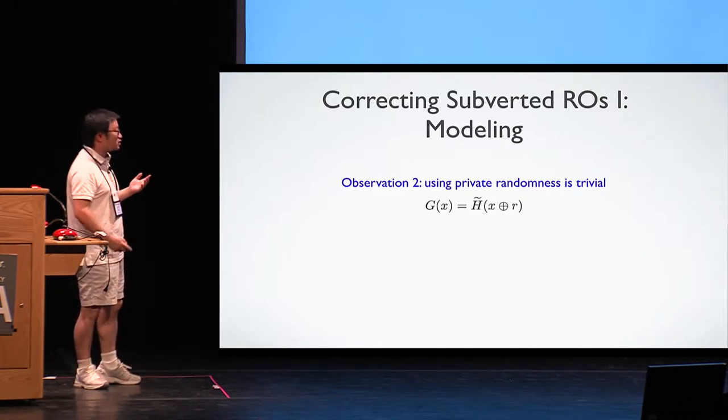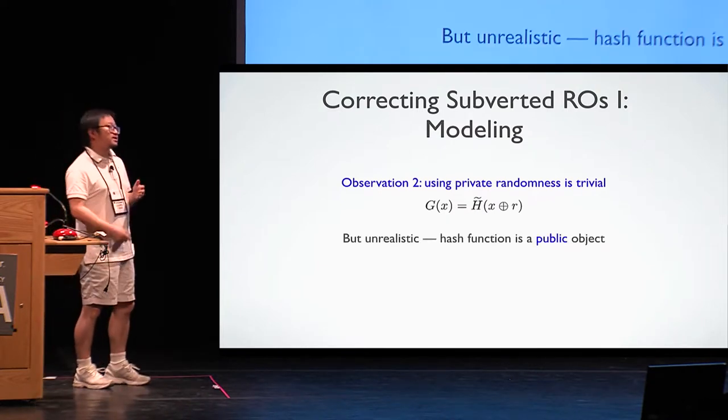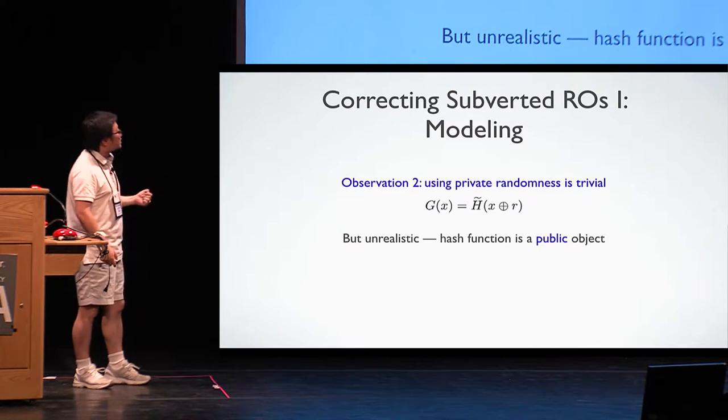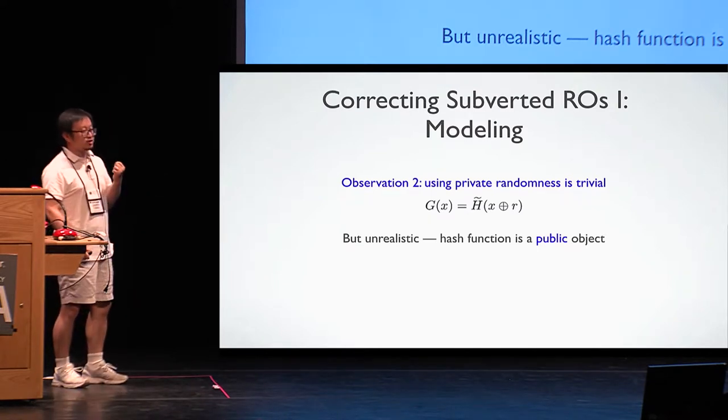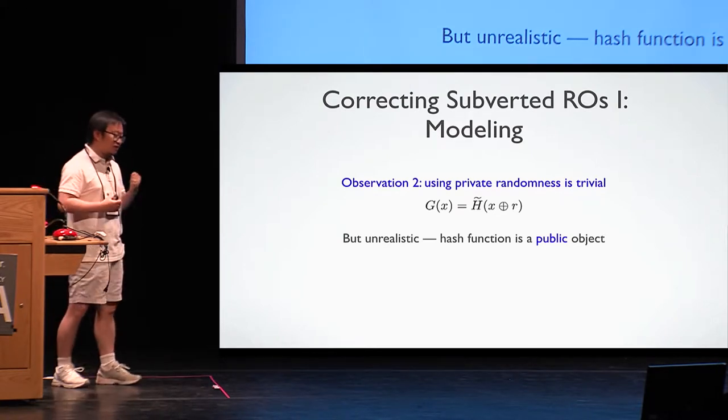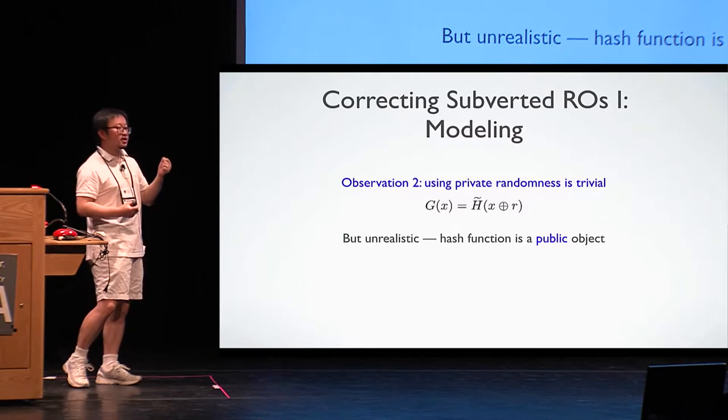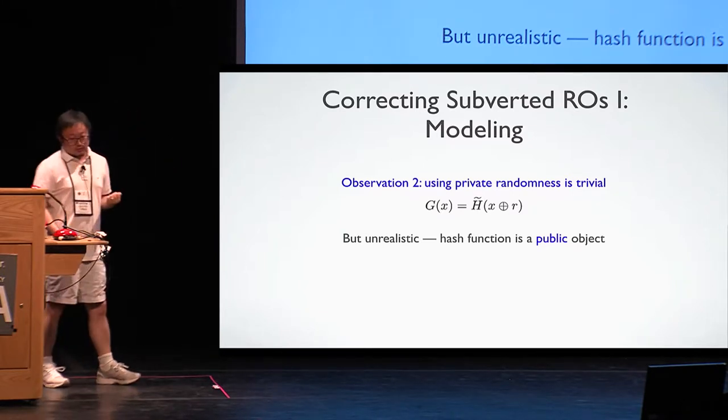But unfortunately, this model is not realistic at all. Because hash function, especially random oracle, is a public object which needs to be accessible by everyone, which can be evaluated by everyone. And in particular, if different people evaluate the same point, it should always return the same output.